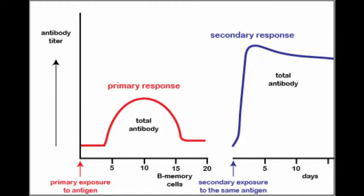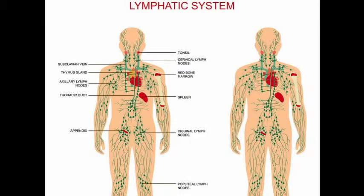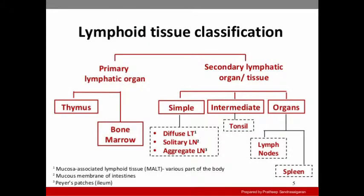The human immune system consists of lymphoid organs, lymphoid tissues, cells (which are all lymphocytes), and soluble molecules like antibodies. Lymphoid organs are of two types: primary and secondary.